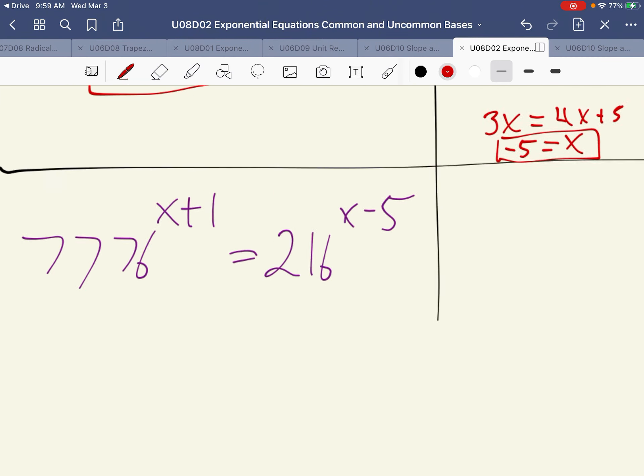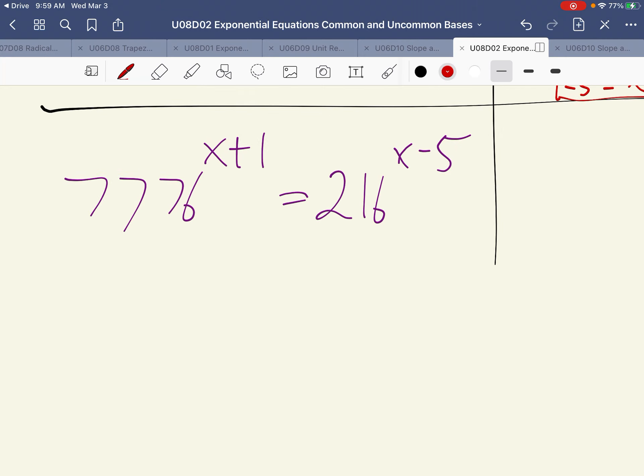All right, so let's try one more example. It's a little more complicated. It's only more complicated because of the base that they have. 7,776 divided by 2. I'll have to use a calculator to make sure I don't make any mistakes.